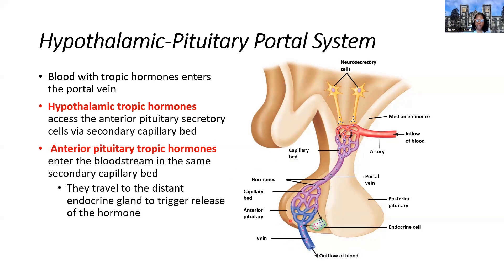The trophic hormones are dropped off at the anterior pituitary, either stimulating or inhibiting its cells. The hormones released from the anterior pituitary then enter the bloodstream and go out to encourage distant endocrine glands to release their secretions.